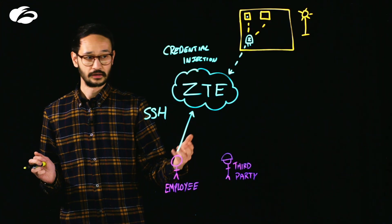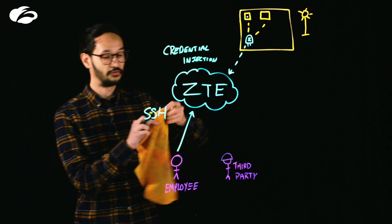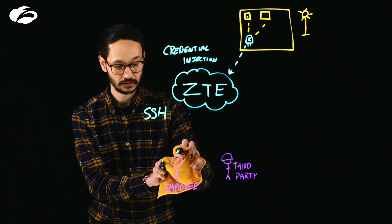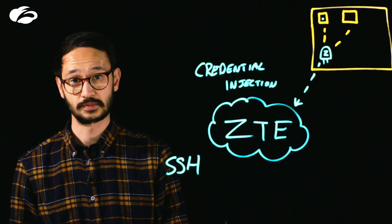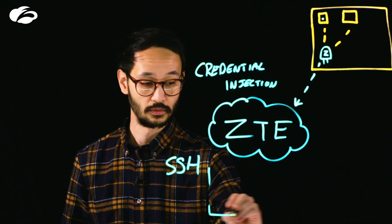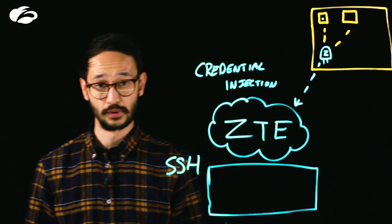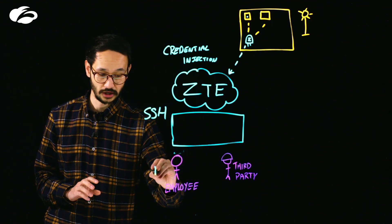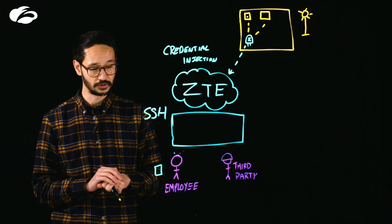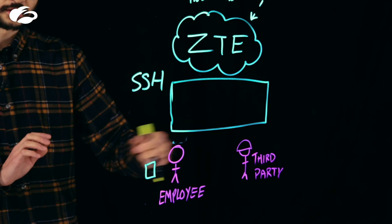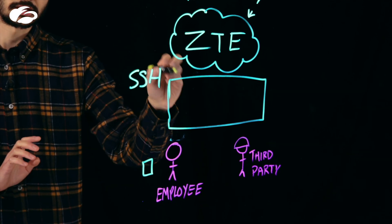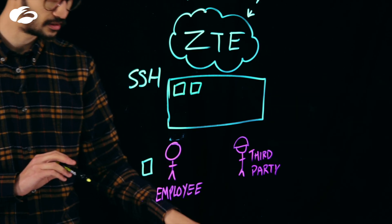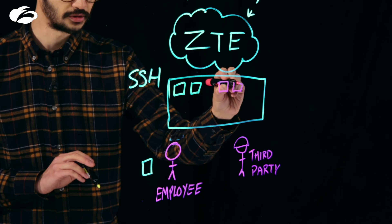What we're now doing is removing the direct line from this employee into the zero trust exchange and instead exposing this user to what is a portal. This portal is accessed via a web browser, so this employee no longer needs any agents on their endpoint. Likewise, this third party is also able to access this same portal, but based upon who they are and what they're trying to access, they will have different types of applications available to them.